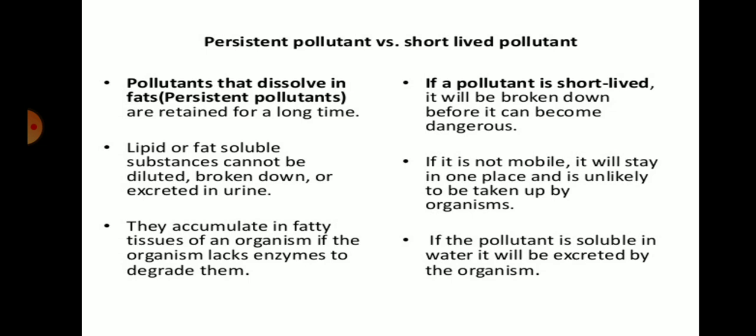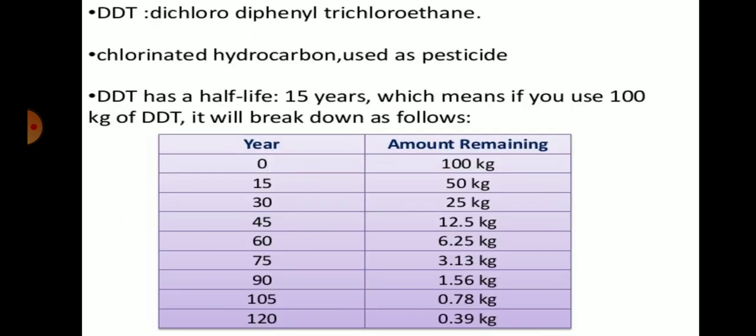Persistent pollutants accumulate in the fatty tissue of organisms because organisms lack the enzymes to degrade them, so they are deposited in the fat body. Short-lived pollutants are soluble in water and excreted in urine. Persistent pollutants are harmful because they accumulate in the body, such as DDT — dichlorodiphenyltrichloroethane — a chlorinated hydrocarbon used as a pesticide with a half-life of 15 years.